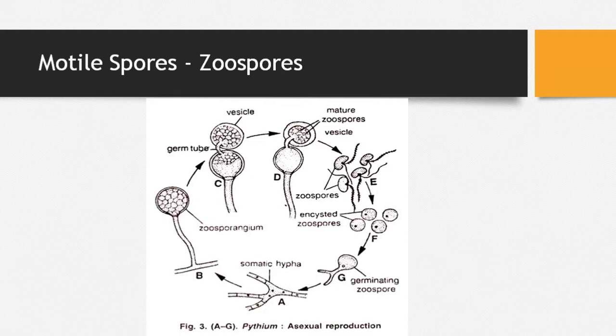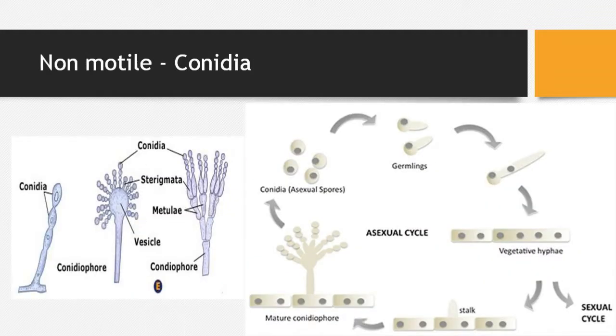The zoospores come into the vesicle, which then forms new hyphae. This method is important because zoospores are produced in large numbers. In the Pythium example, the zoospores are biflagellate — one flagellum is tinsel type and one is whiplash type. After germination, their flagella are lost, they become round, and germinate via a germ tube to form new somatic hyphae.